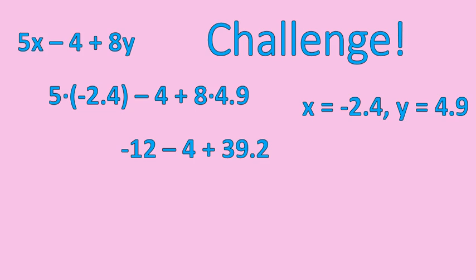Now what I'm going to do is work with the order of operations. It says I have just addition and subtraction left. So I start at the left moving to the right and I'm going to do my subtraction first. Negative 12 minus 4 gives me negative 16. I still have the plus 39.2 I have to deal with afterwards, but I've joined together negative 12 and negative 4.